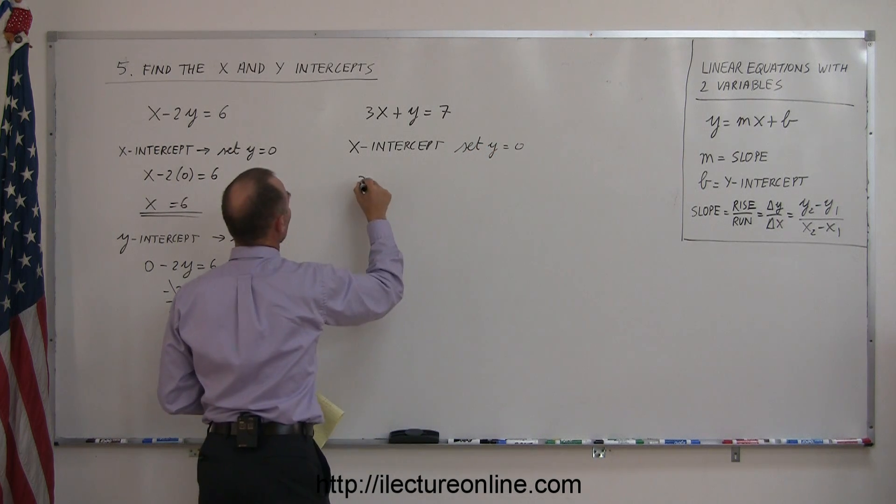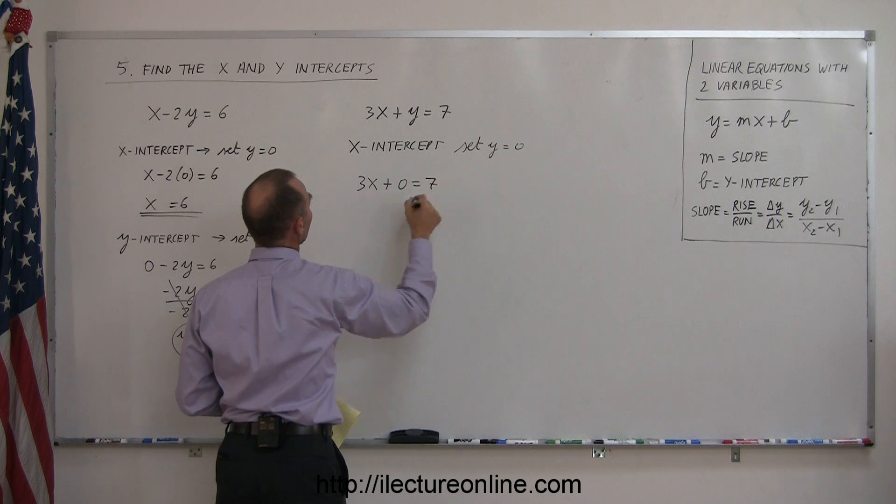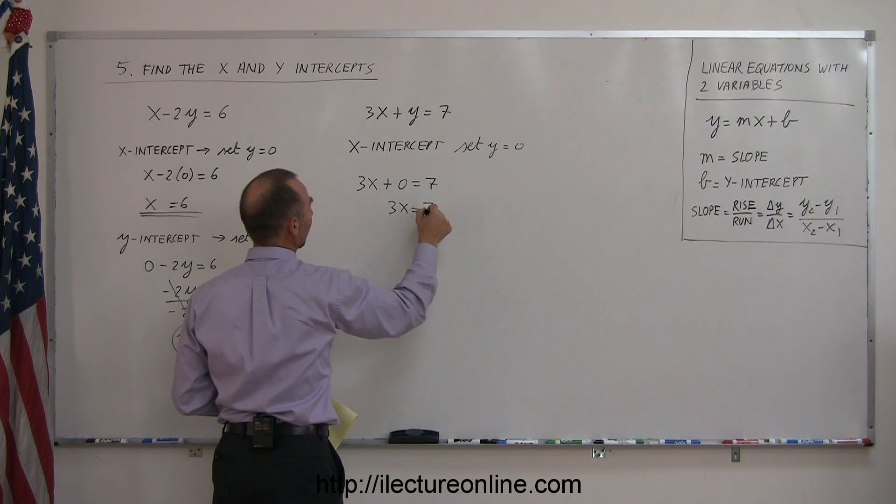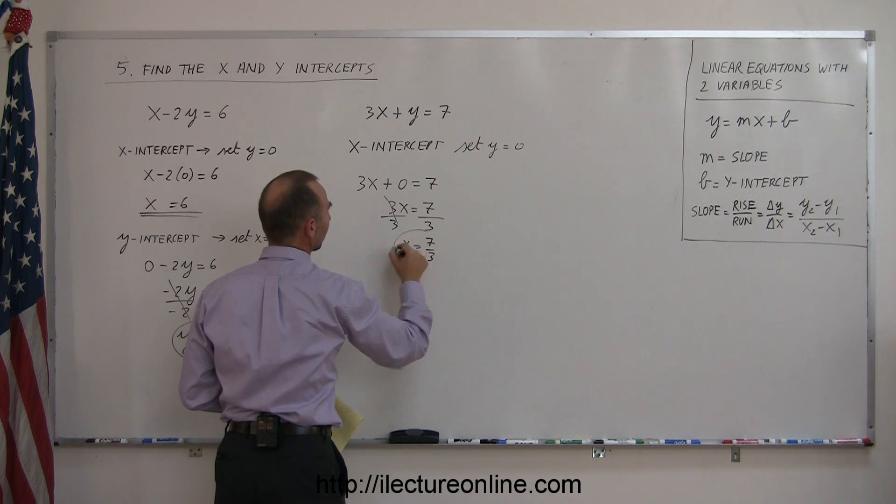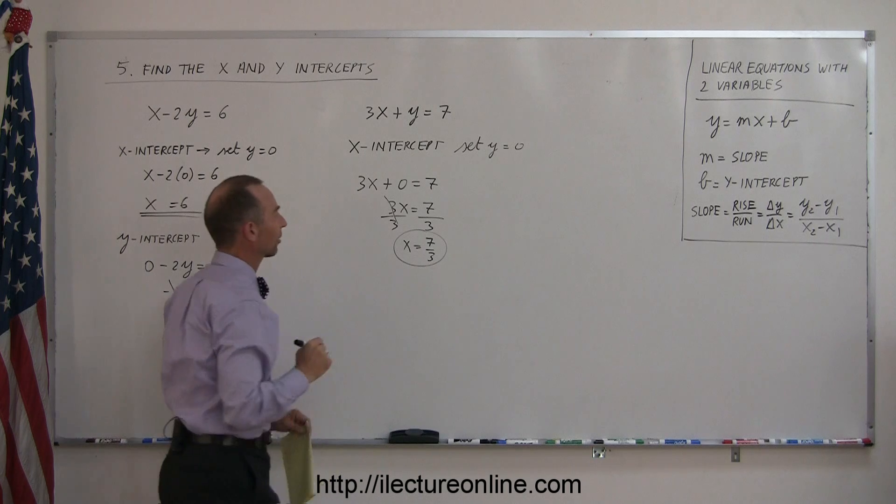So, we have 3x plus zero equals 7. Or, 3x equals 7. Divide both sides of the equation by 3, and you get x equals 7-thirds. There's your x-intercept.